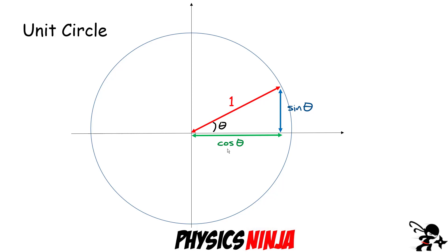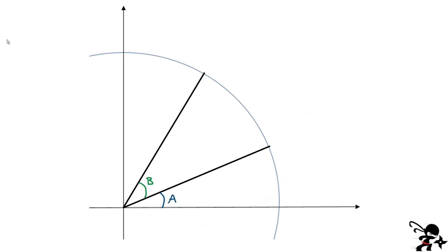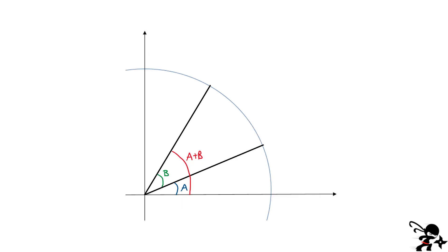Now we're going to draw two angles and start our proof. I've got two black lines here, and remember that each one of these has a length of one because we drew this unit circle. I've labeled two angles: angle A for the first one and angle B between the two black lines. That means that the angle over here has to be the sum of angles A and B together. We start from here and draw opposites and adjacents for some of these triangles, then link them together to make the proof.